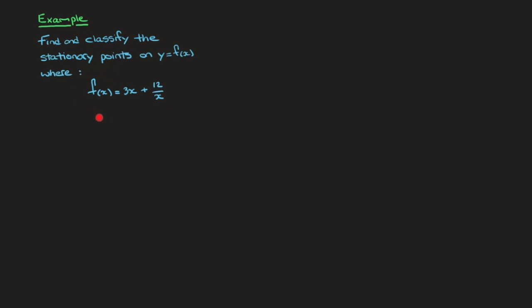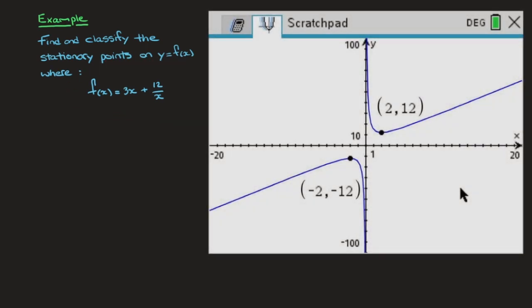The function we'll be working with is f(x) = 3x + 12/x. Looking at this curve's graph, we can see that it comes in two branches — one branch in the first quadrant and a second branch in the third quadrant. This curve has two stationary points: a local minimum and a local maximum. By the end of this video we'll know how to find the coordinates of these two points and prove whether each is a minimum or maximum, all without looking at the graph or touching a calculator. So let's get started.